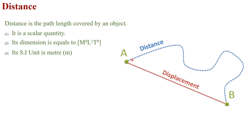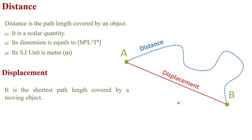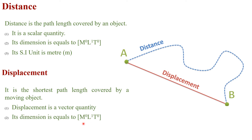The path length covered from point A to B — shown by the blue color line — is the distance. When we talk about displacement, it is the shortest path length covered by a moving object. The shortest path length from point A to point B is called displacement. It is a vector quantity. Its dimensional formula is M⁰L¹T⁰, and its SI unit is meter.